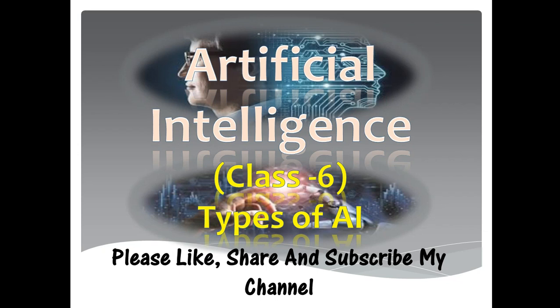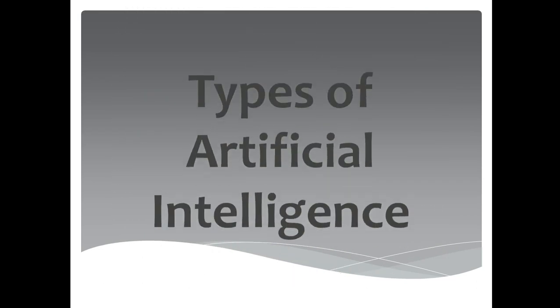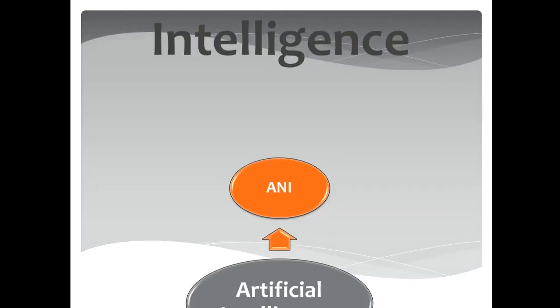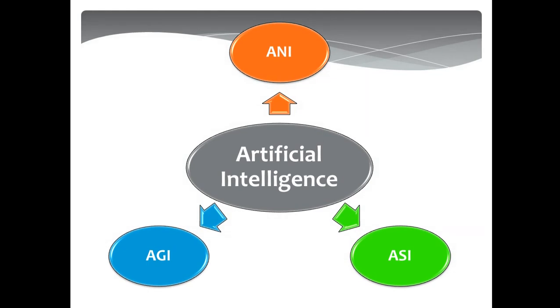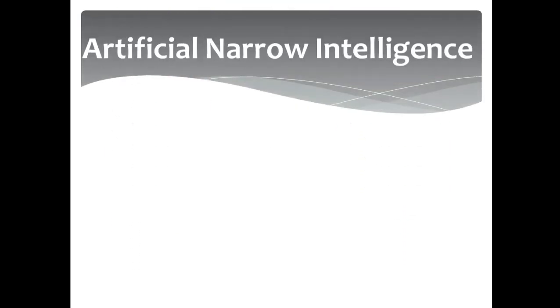Welcome to Mishika Classes. Today's topic is Artificial Intelligence, Class Number 6. We are going to discuss the types of AI. There are mainly three types: ANI, AGI, and ASI. These are the three main types of artificial intelligence, and we are going to discuss each one of them.